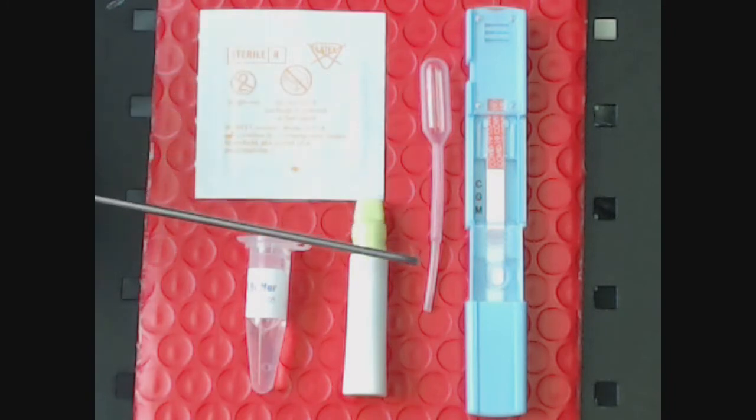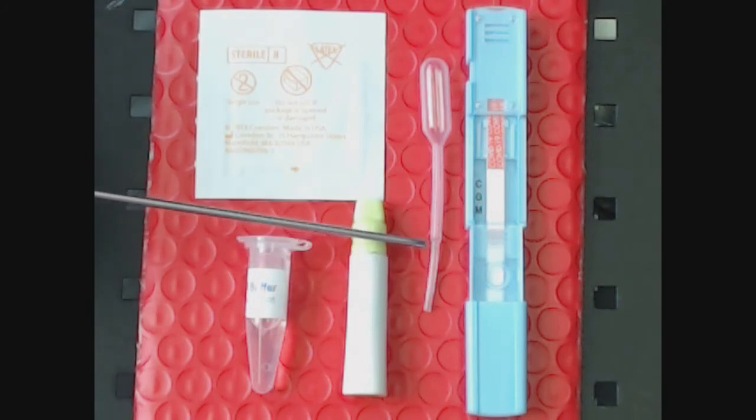This one works very well. When you're drawing the blood up, just draw it up right in the distal aspect of it. Then as soon as it's drawn up in this small part, just put it right into the cassette.